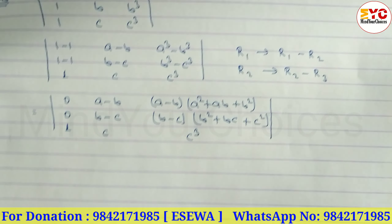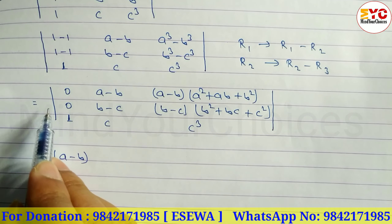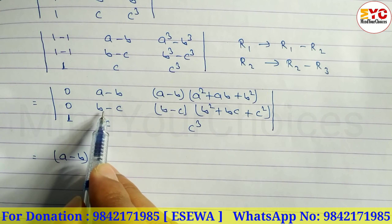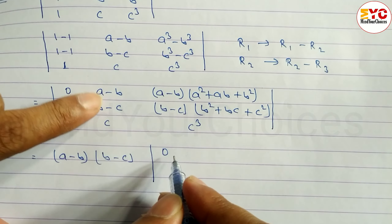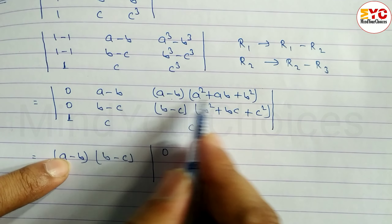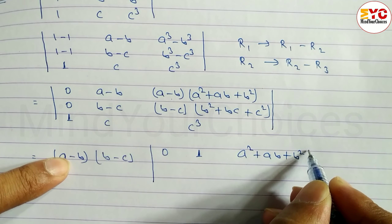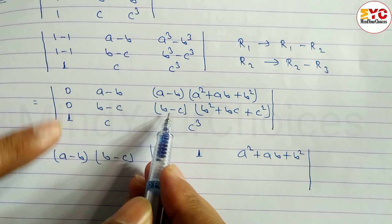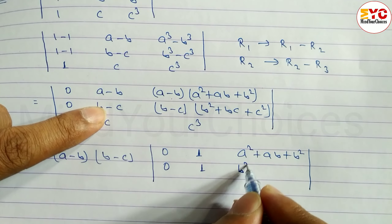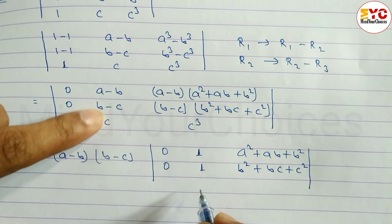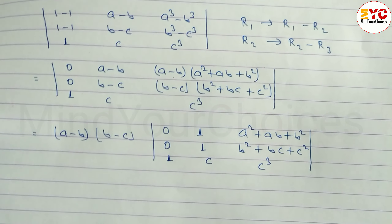Take (a-b) common from the first row: remaining entries are 0, 1, and (a² + ab + b²). Take (b-c) common from the second row: remaining entries are 0, 1, and (b² + bc + c²). The third row remains: 1, c, c³. Now we have two elements that are 0.